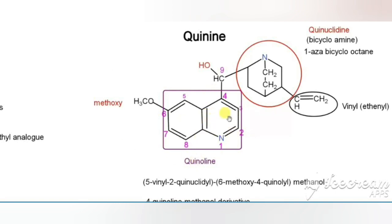Quinine has a quinoline ring and also one more ring called quinuclidine. Quinuclidine is a bicycloamine, otherwise called 1-azabicyclo[2.2.2]octane. It is called octane because of the presence of eight atoms in the bicyclic framework. It is bicyclo because it contains nitrogen and has two rings.